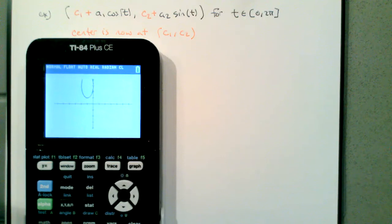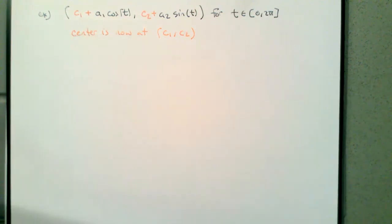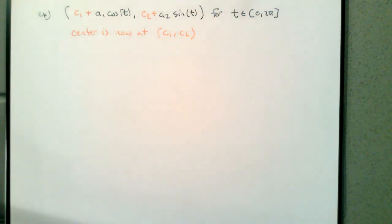When we're parameterizing curves, we have a lot more freedom in how we describe curves in a plane, and this will translate to freedom in describing curves in space. So that's great — we have more ways to describe a thing. That's also awful — we have more ways to describe a thing, so then we have to pick one.